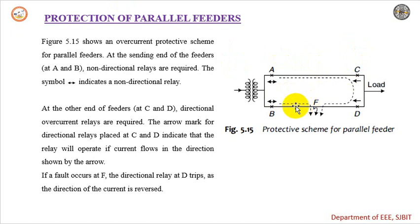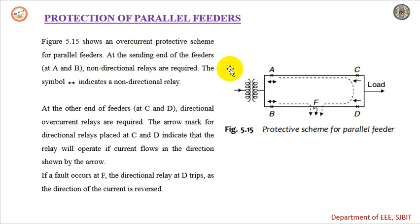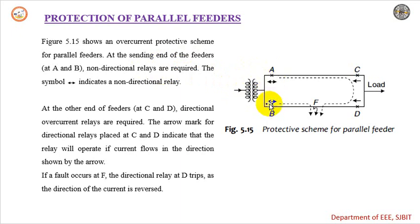This is the protective scheme used for parallel feeders. Here we have two parallel feeders. The overcurrent protective scheme for the parallel feeders is shown in this figure. At the sending end of the feeder, that is at A and B locations, non-directional relays are required. The non-directional relays are represented by the double-sided arrow symbol. Both A and B are non-directional.